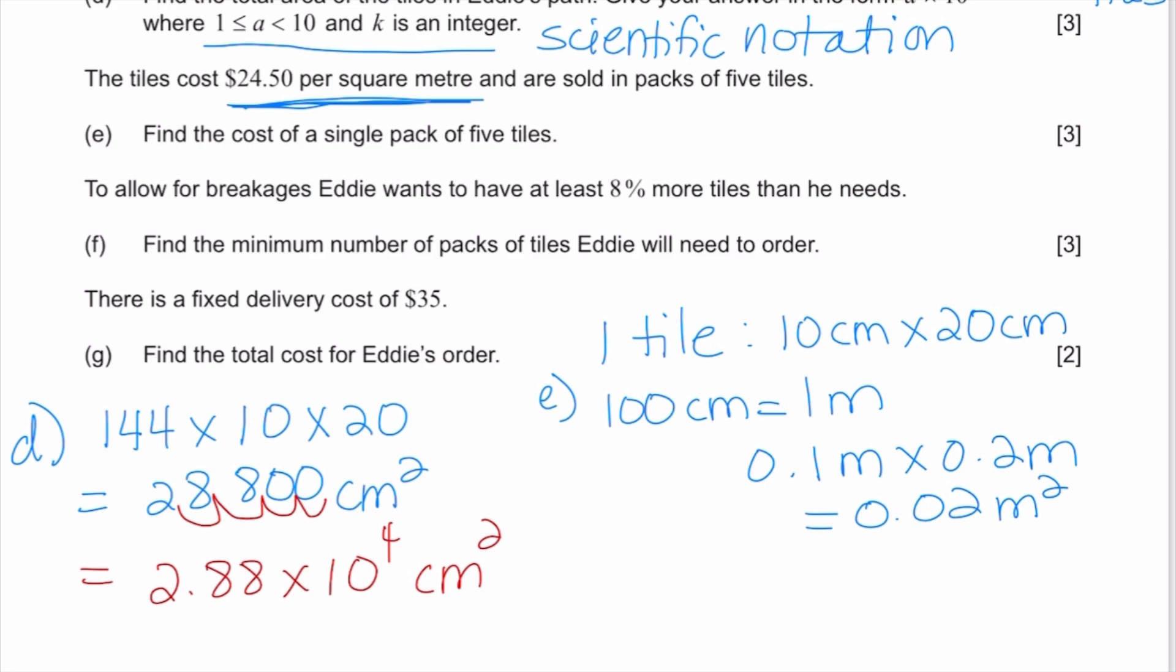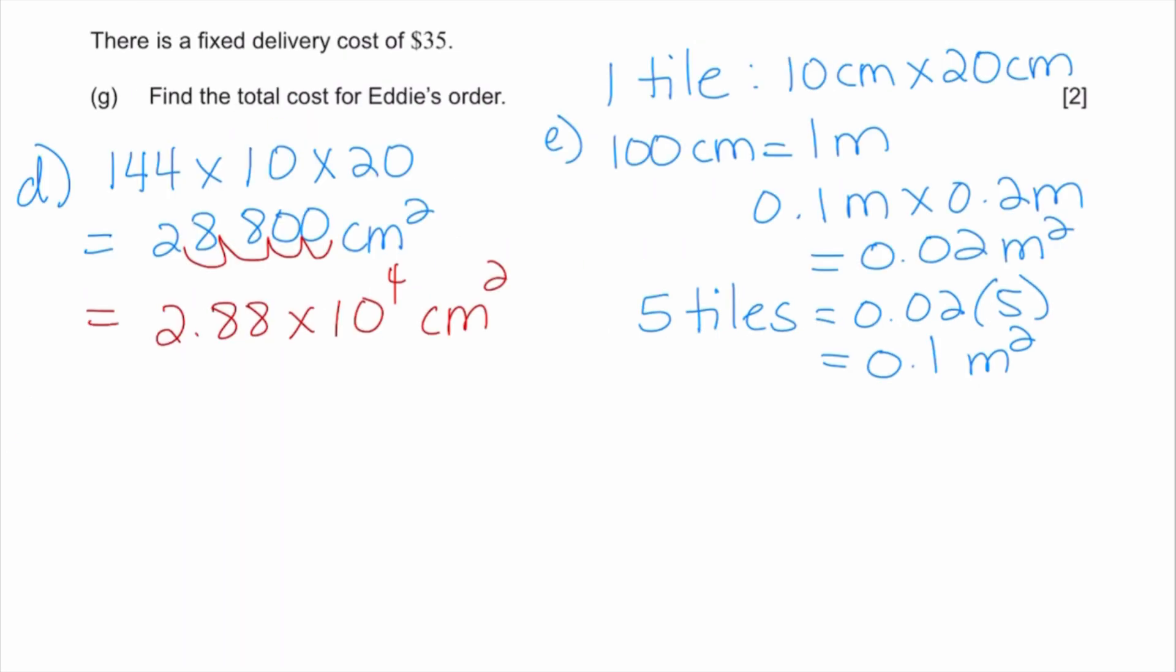It says that they are going to sell the tile in packs of five. It means that if I have five tiles with one pack, I can cover 0.02 times 5, which is 0.1 square meters. The tiles are costing 24.50 per square meter. That means that I'm going to need 24.50 times 0.1, which is 2.45 per pack of five tiles.